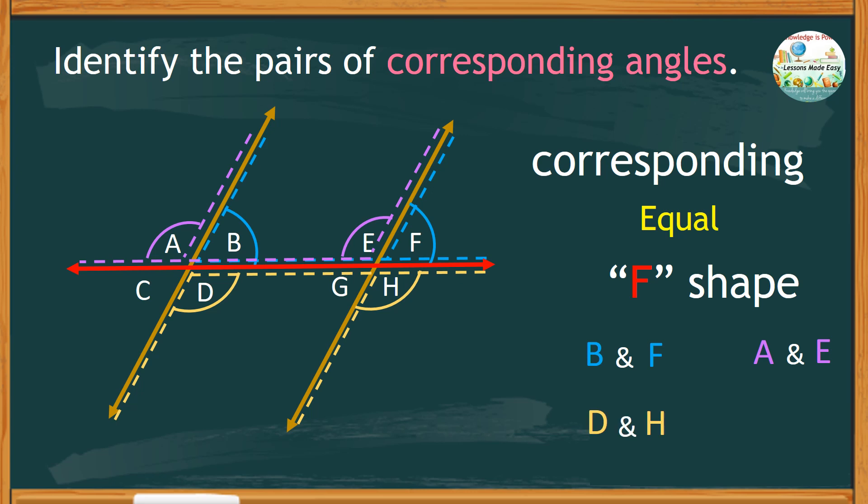On the same side of the transversal, there's another F shape, and these two angles are also equal, angles C and G.